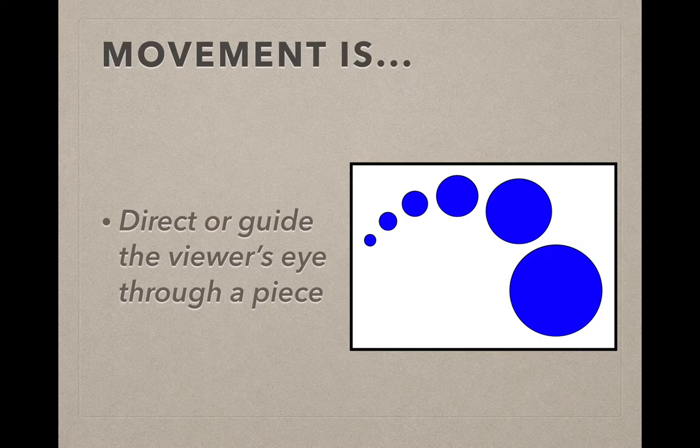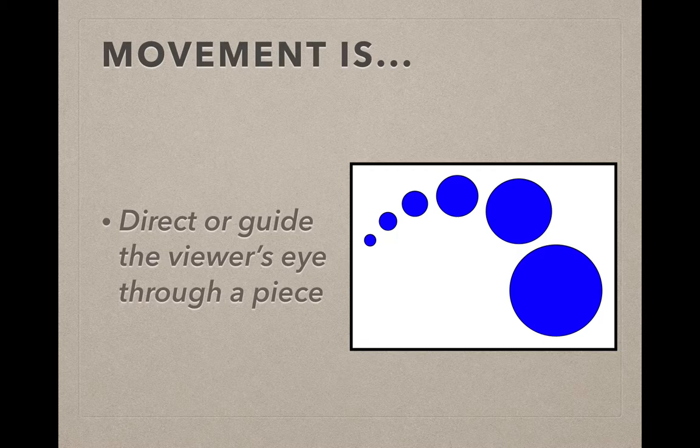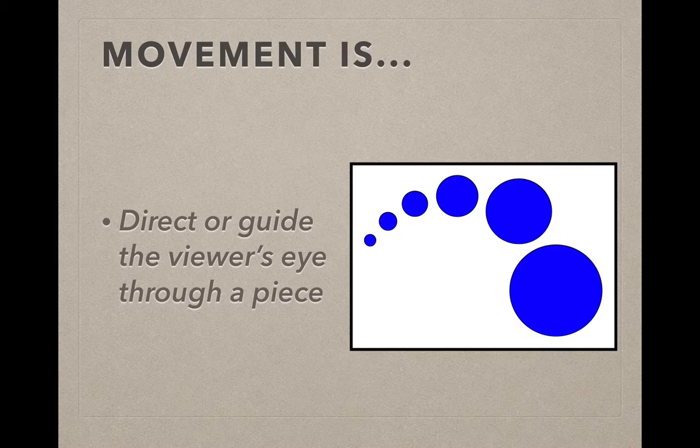I can also direct or guide your eye through a piece as well. In the example you see here, either your eye is starting in the little circle, moving to the big circle or vice versa. Your eye is moving in an arc because those circles are in an arc. You're not really visually going from the big circle to the little circle and back. You follow the circles in between as well.